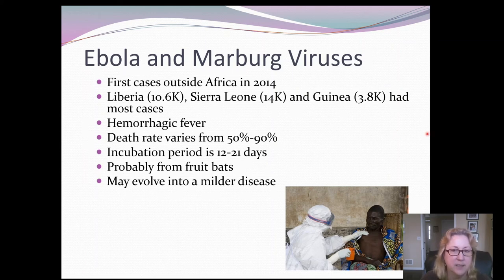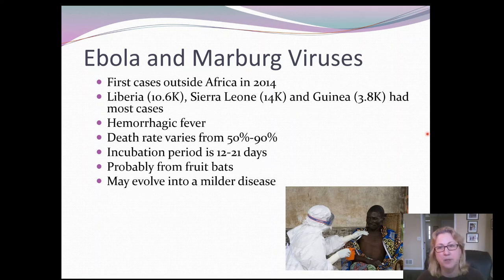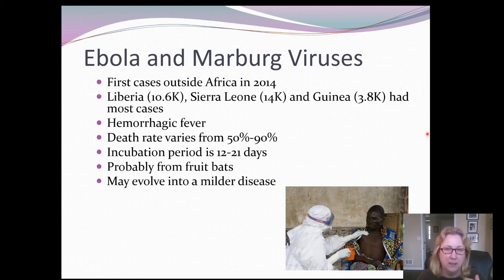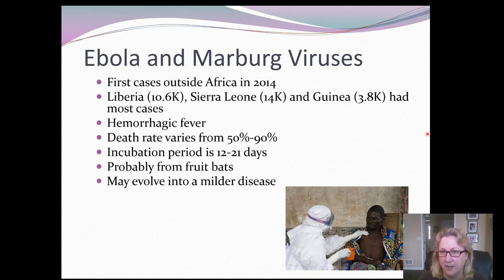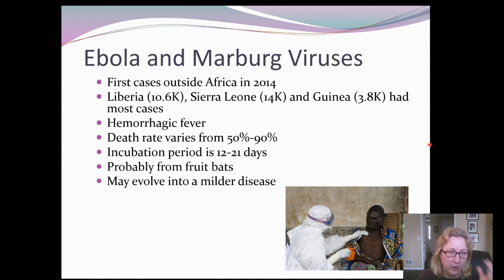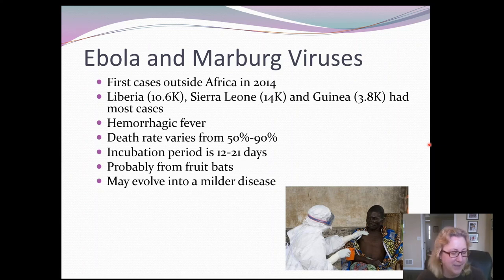Unfortunately, by the time scientists got to that village where the first case occurred, people there already knew that fruit bats were suspected of spreading this. There was a fruit bat colony in a hollow tree in the middle of the village, and the people had already burned the tree before scientists got there, so they weren't able to take samples. That's probably where it came from, but we don't know for sure. Hundreds of different animals have been tested and we still don't know what species is hosting this virus.